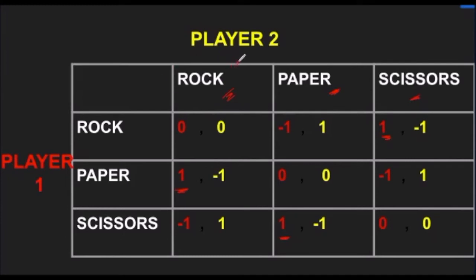Now, let's see what player 2 will do. If player 1 chooses Rock, then player 2 will choose Paper. If player 1 chooses Paper, then player 2 will choose Scissors.